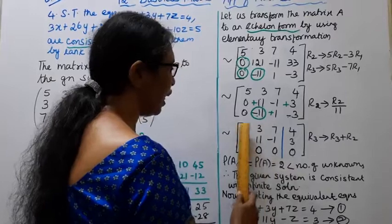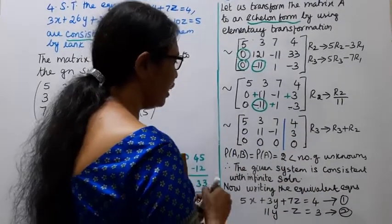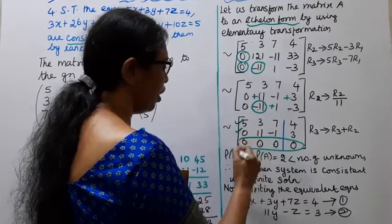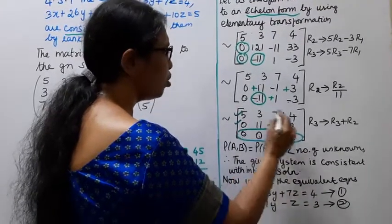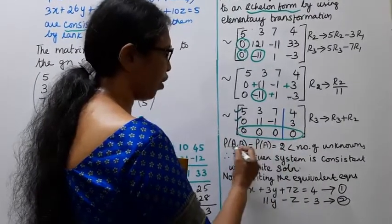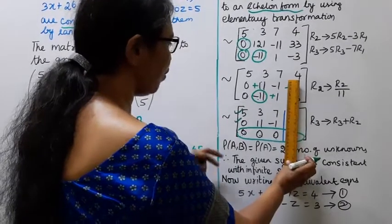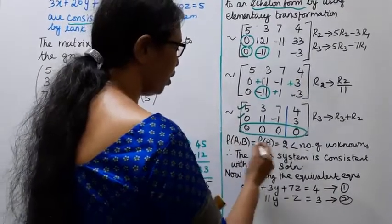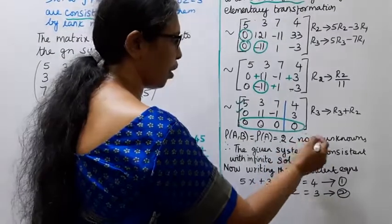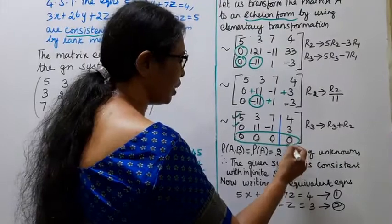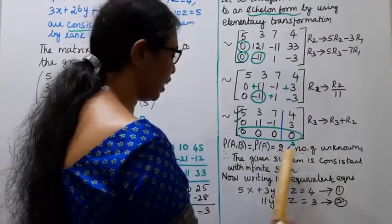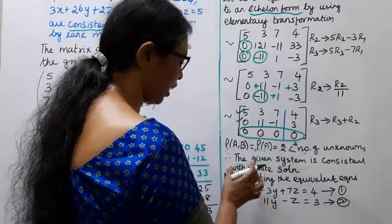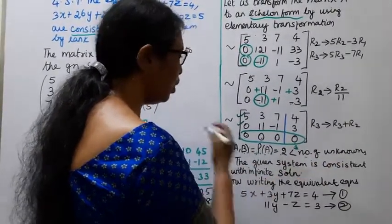Rank of [A|B]: there are 2 non-zero rows, so rank of [A|B] = 2. Rank of A = 2 as well. Since rank of A equals rank of [A|B] = 2, which is less than the number of unknowns (X, Y, Z = 3), the given system is consistent with infinite solutions.